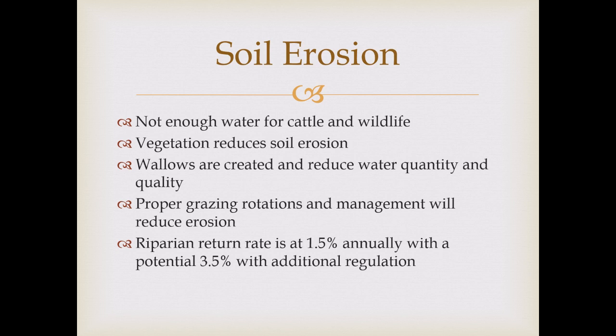Soil erosion. There's not enough water for cattle and wildlife in the area, so riparian areas just get trampled. Vegetation — trees and shrubs — helps reduce soil erosion by holding the soil together and preventing it from washing into streams. But in overgrazed areas, wallows are created, which are basically mud pits. Animals roll around in them and it doesn't allow animals to reach the water properly. Proper grazing rotations and soil management will reduce erosion and give riparian areas a break from cattle and wildlife.